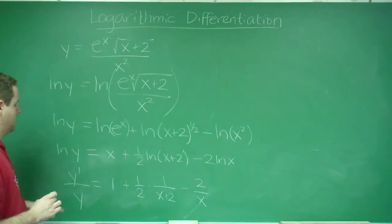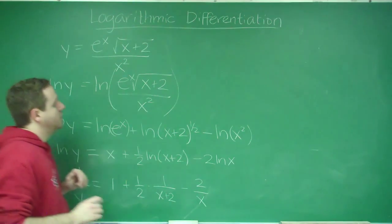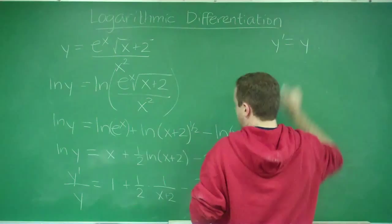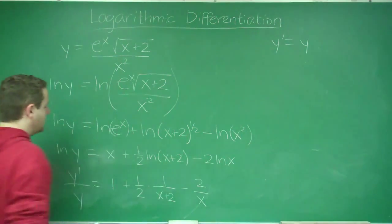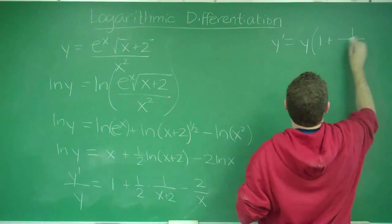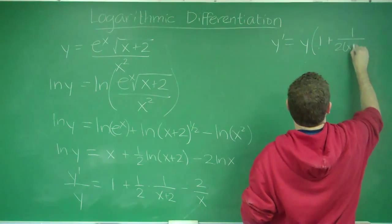We're almost done now. All we have to do is multiply over by y. We can simplify this stuff a little bit by saying this is going to be 1 plus 1 over (2 times (x plus 2)) minus 2 over x.